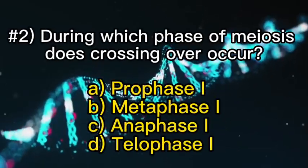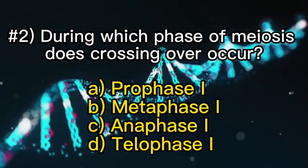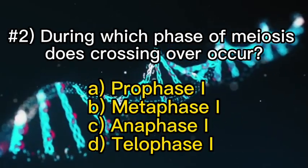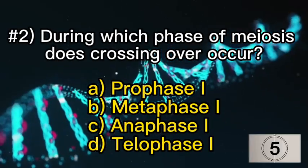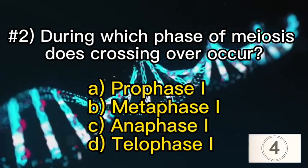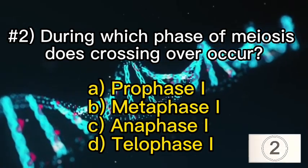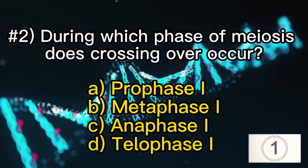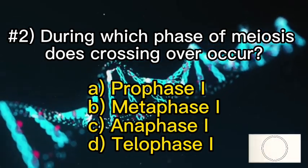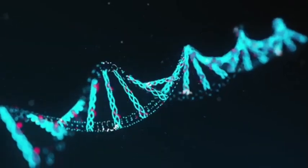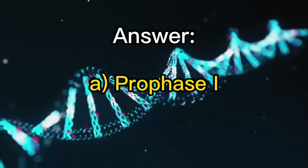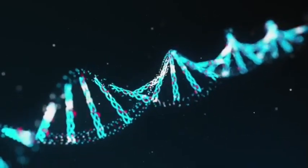Number two: during which phase of meiosis does crossing over occur? A — prophase I.